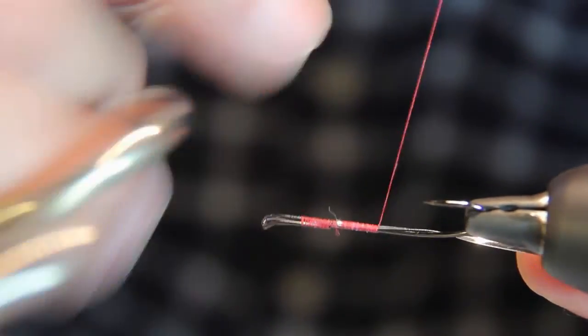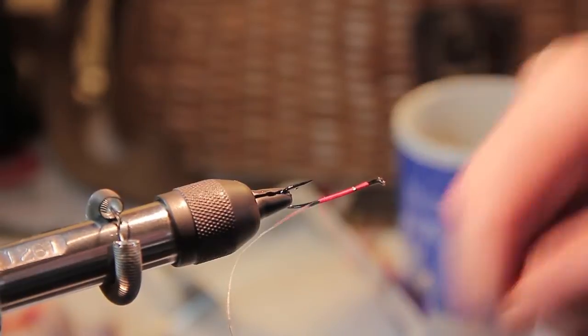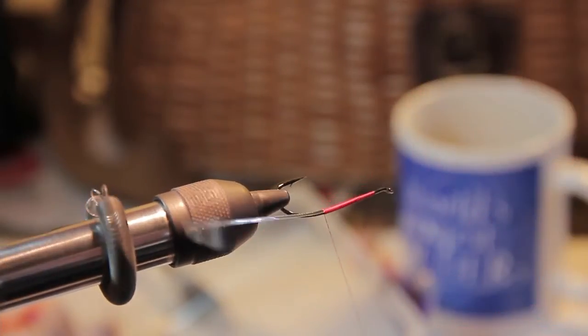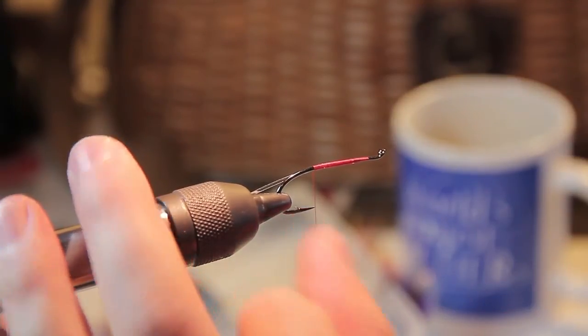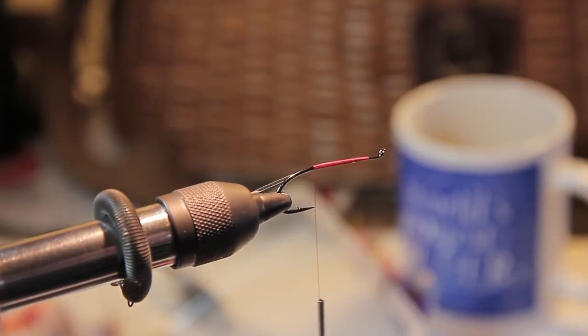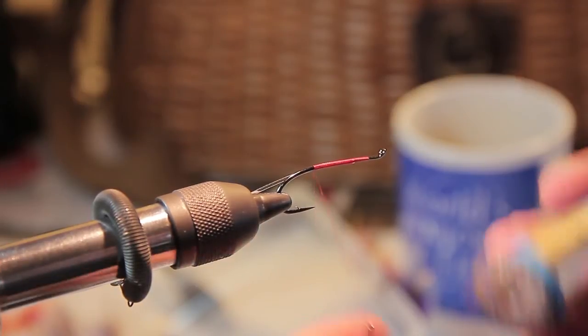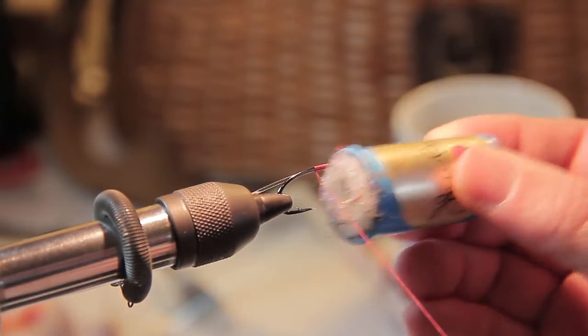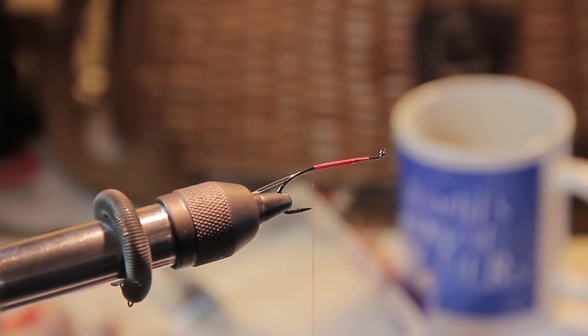Each thread wrap is touching, spaced tight, not overlapping, just side by side. And I will stop at a point where my thread dangles right at my hook point. This is the tie in point where I will tie in my tail. I like to have wax on hand and wax my thread, so I'll just give it a little dab of wax to help hold the tail material in.